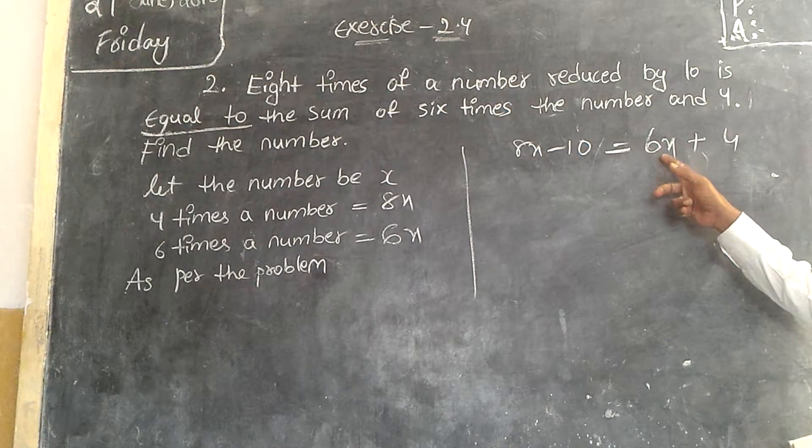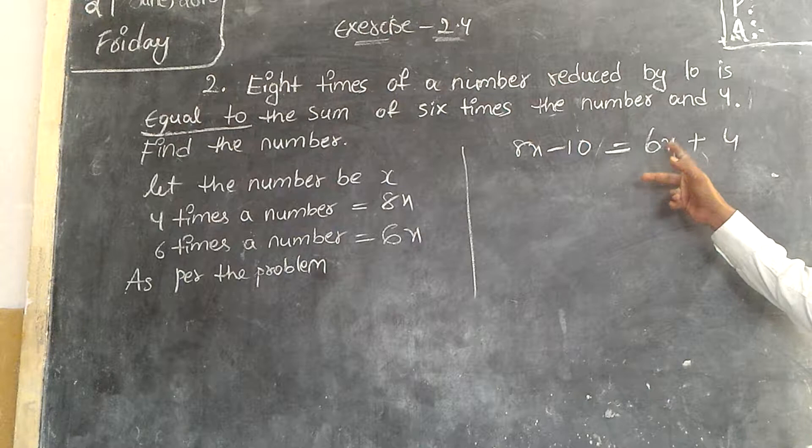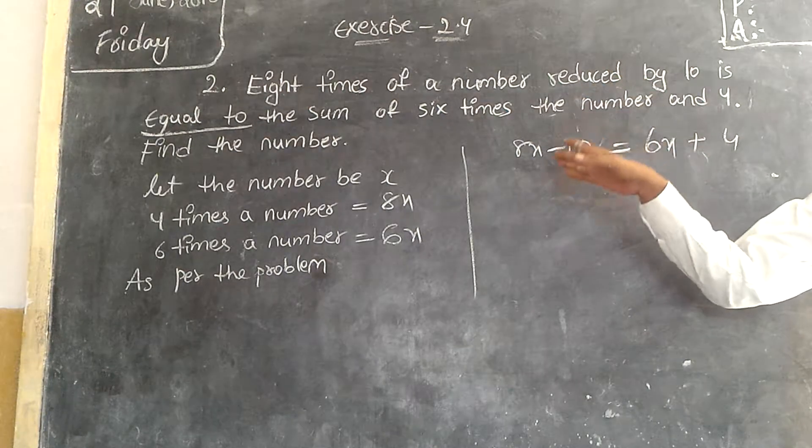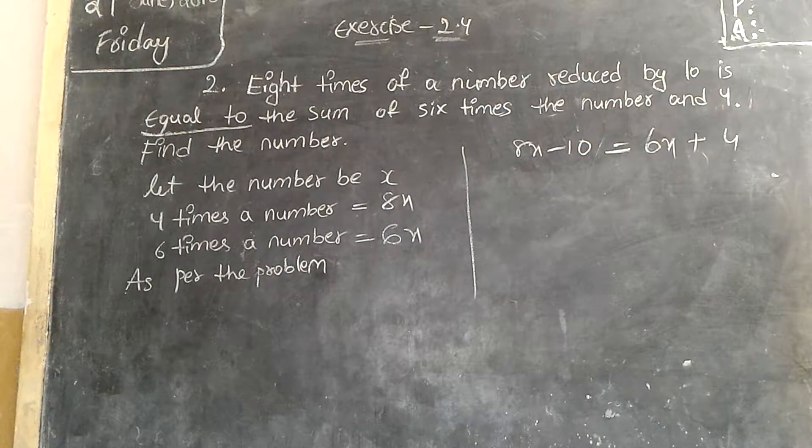Six times of number plus by 4 is always equal to 8 times the number reduced by 4. This is the given statement by the problem.